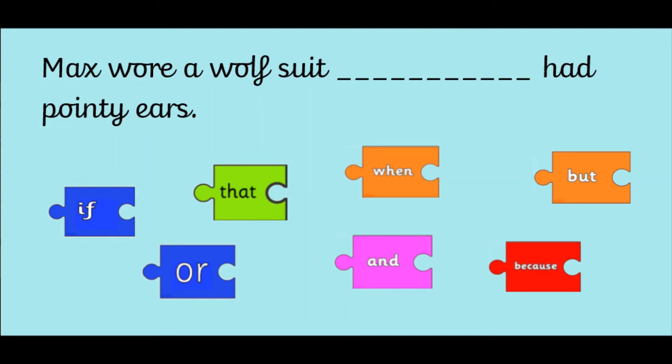And this is the last one that we're going to do together. Max wore a wolf suit had pointy ears. Pause the video and have a think about which of these conjunctions needs to go in the gap. Off you go.